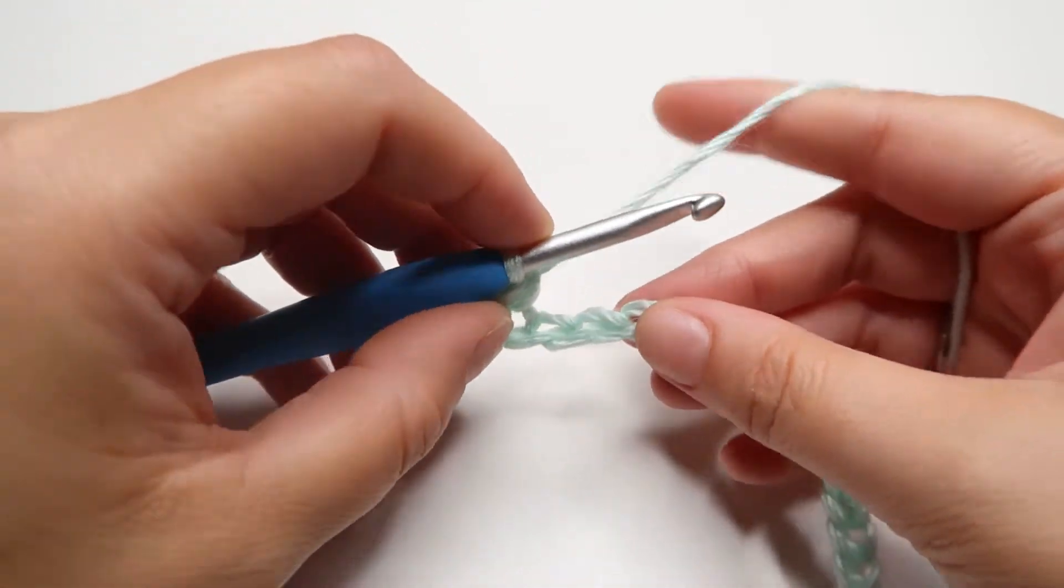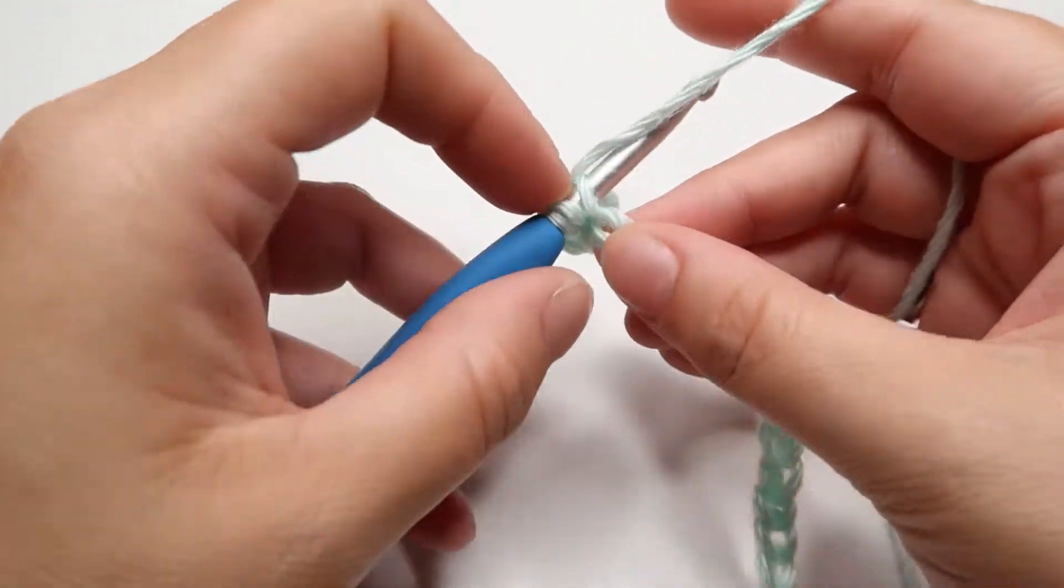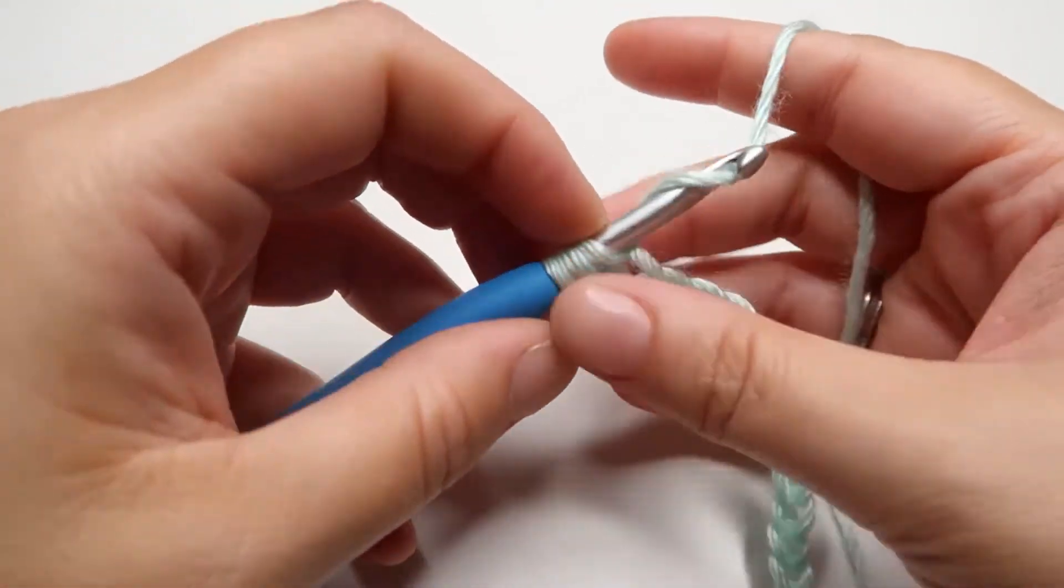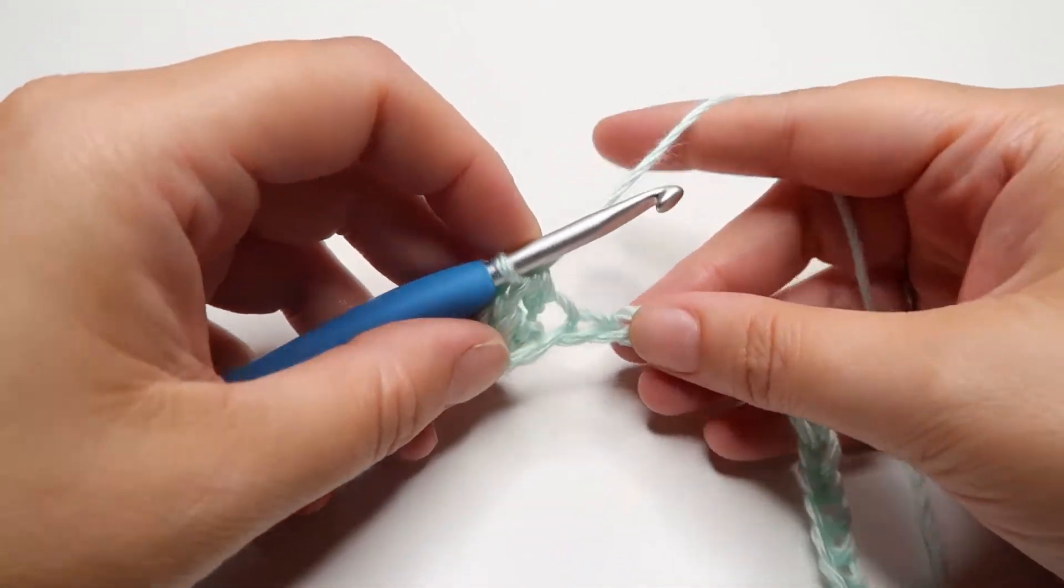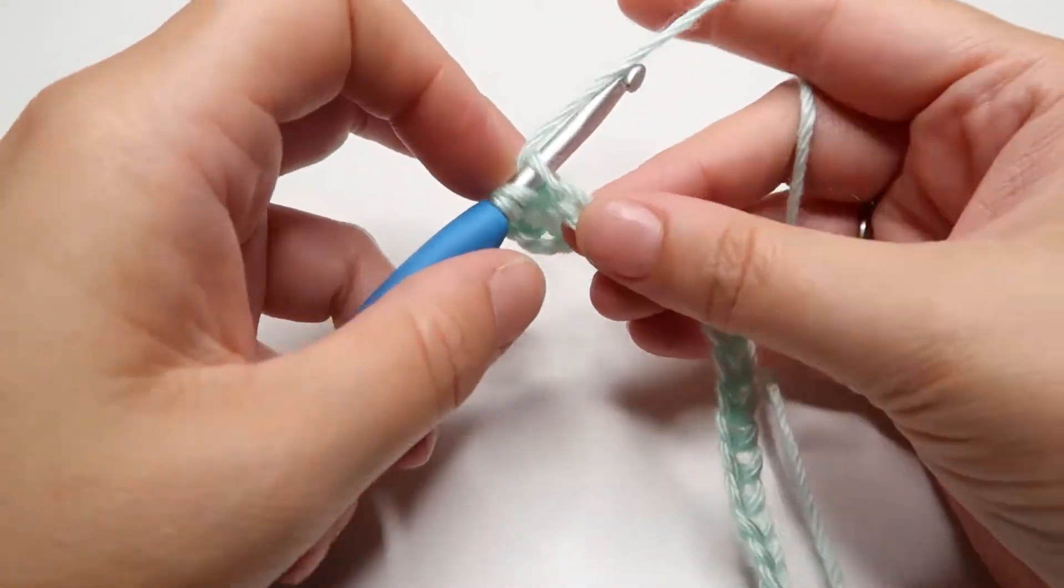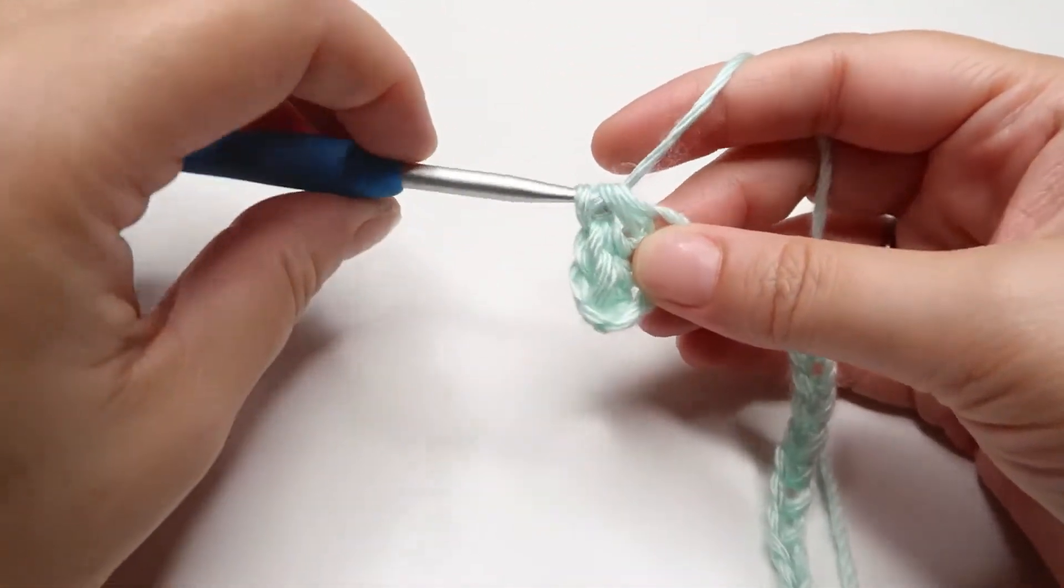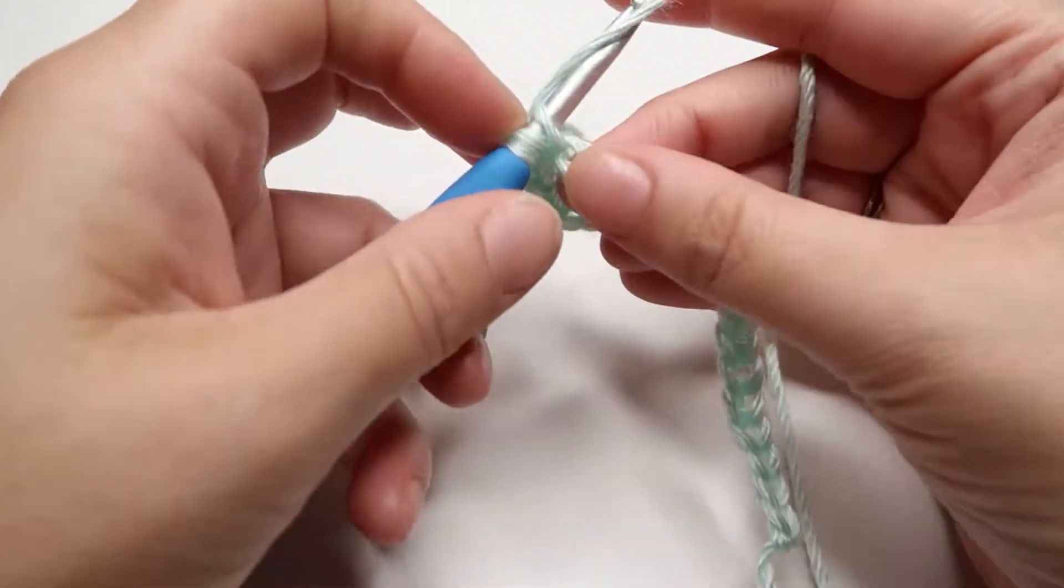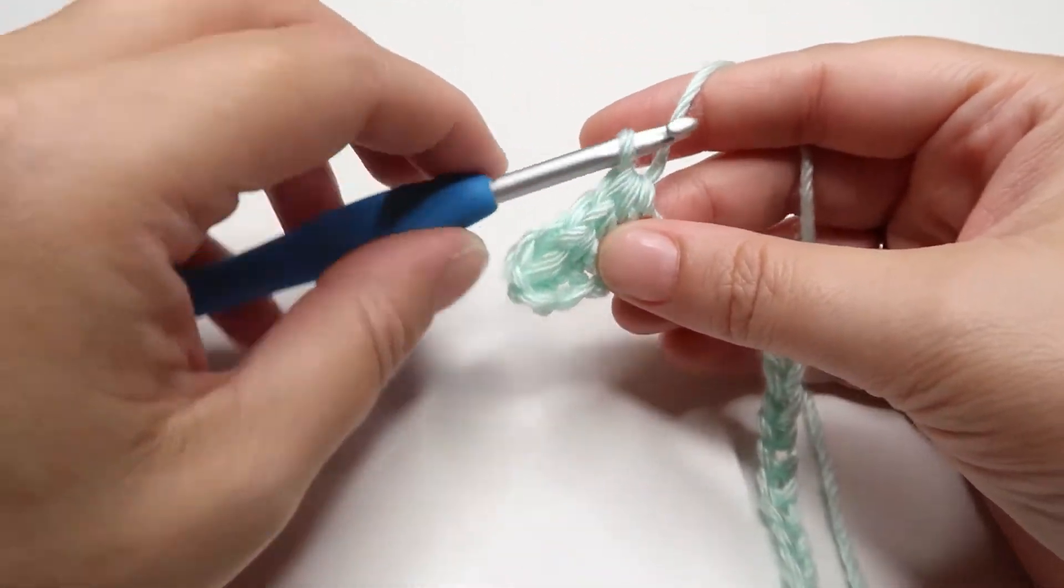Yarn over, insert your hook into the next chain, yarn over again, pull a loop through. Three on your hook, yarn over and pull through all three. That's the half double crochet. So just continue working half double crochets all the way to the end of the chain. Yarn over into the next chain, yarn over, pull it through, yarn over and pull through all three.